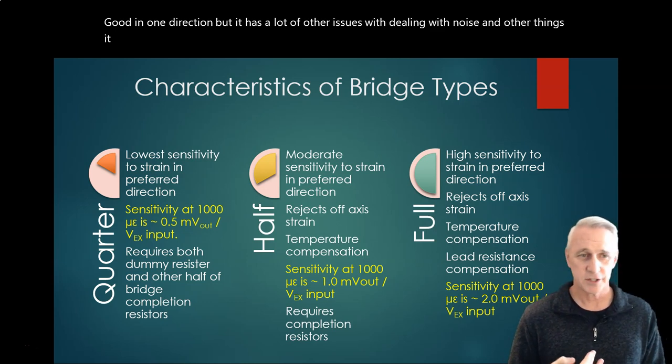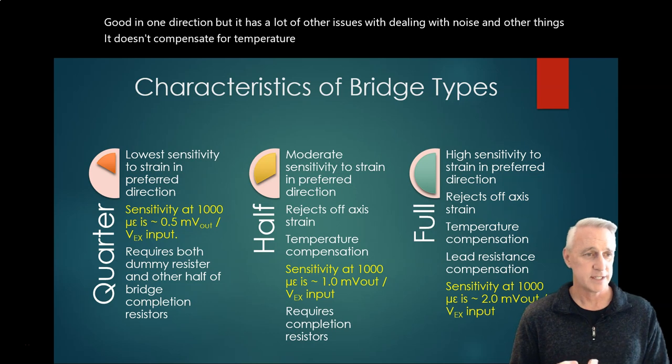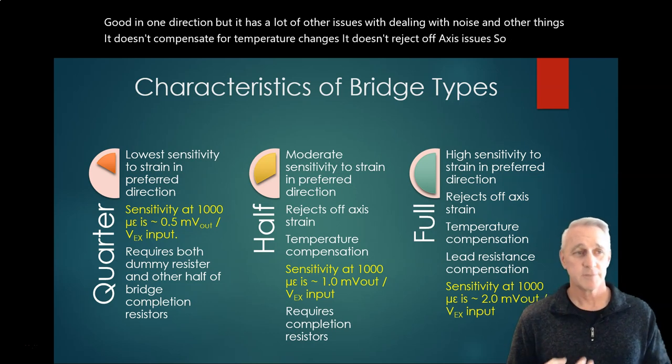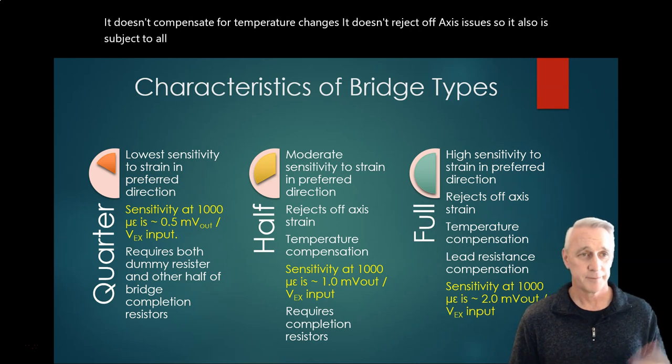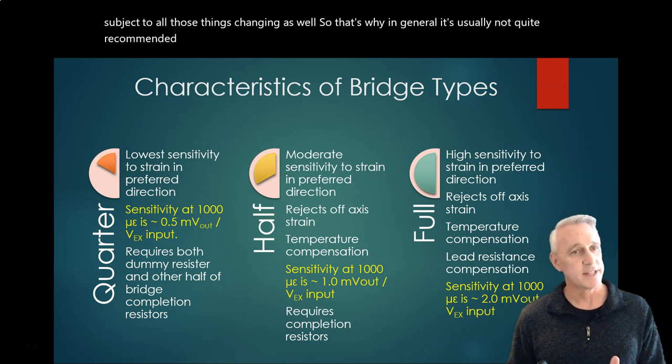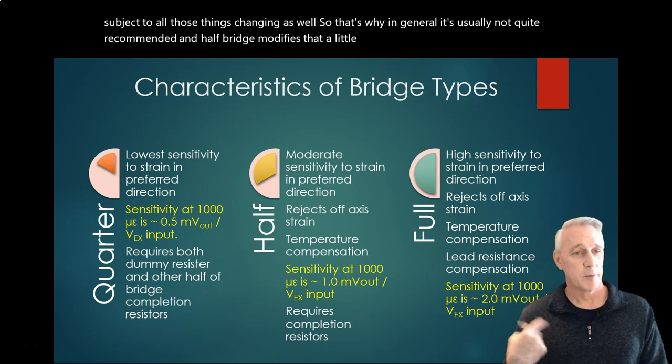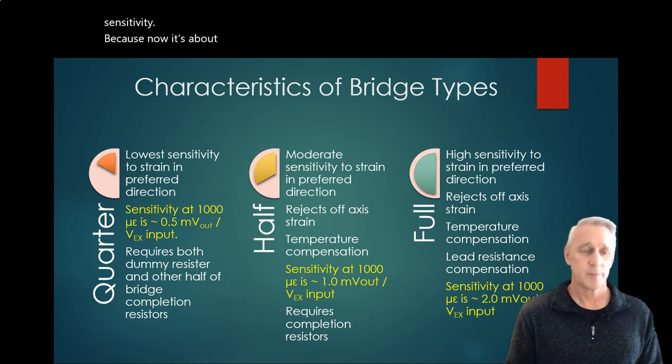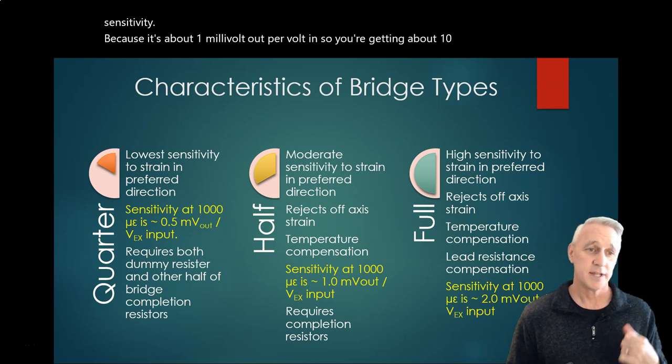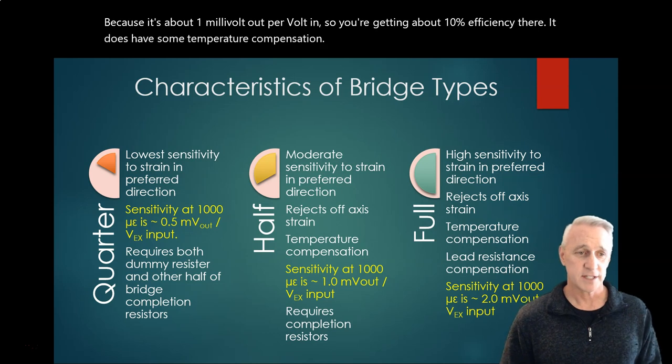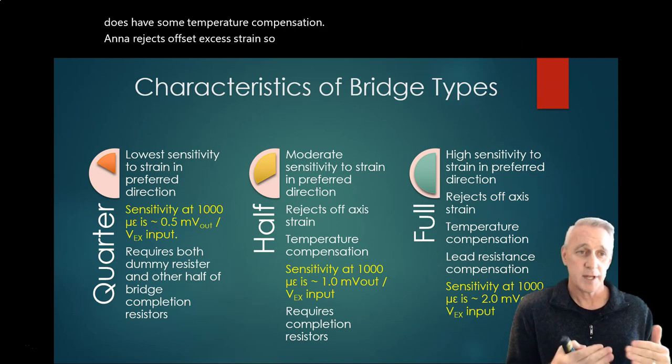So that's why in general, it's usually not quite recommended. A half bridge modifies that a little bit. You get a little bit more sensitivity because now it's about one millivolt out per volt in. So you're getting about 10% efficiency there. It does have some temperature compensation, and it rejects off-axis strain. So this is actually kind of a happy medium on cost.